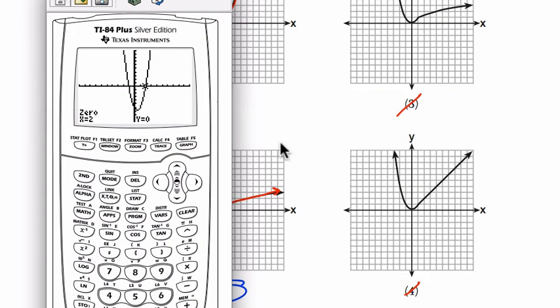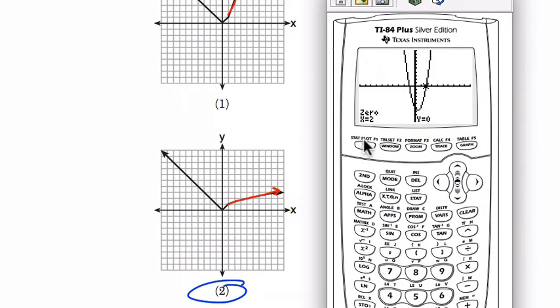Now, if you want to get a sense of what these things look like on the graphing calculator, you just go to your Y equals button, clear off anything you have on there. First, try the square root of x. Second, square root, right, this is the square root button right here, x. If you go to graph, you'll see that shape right there.